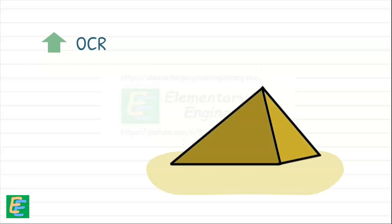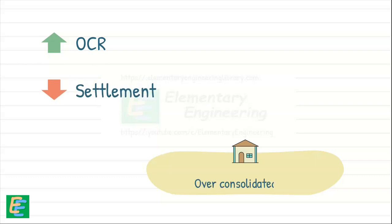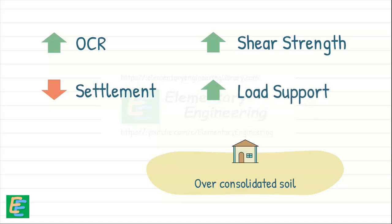Also, a higher value of overconsolidation ratio indicates that the soil has been previously loaded far beyond its current stress level and has undergone significant consolidation. This means it is less likely to consolidate further under current loads, resulting in less settlement. Such overconsolidated soil generally exhibits higher shear strength and can tolerate greater loads before failure compared to normally consolidated soil.